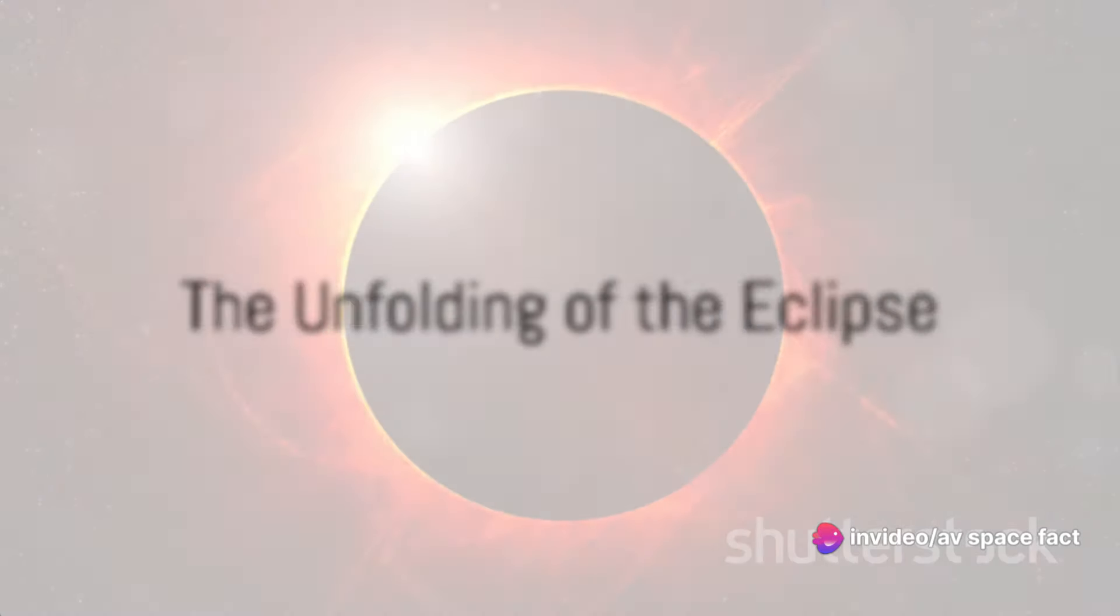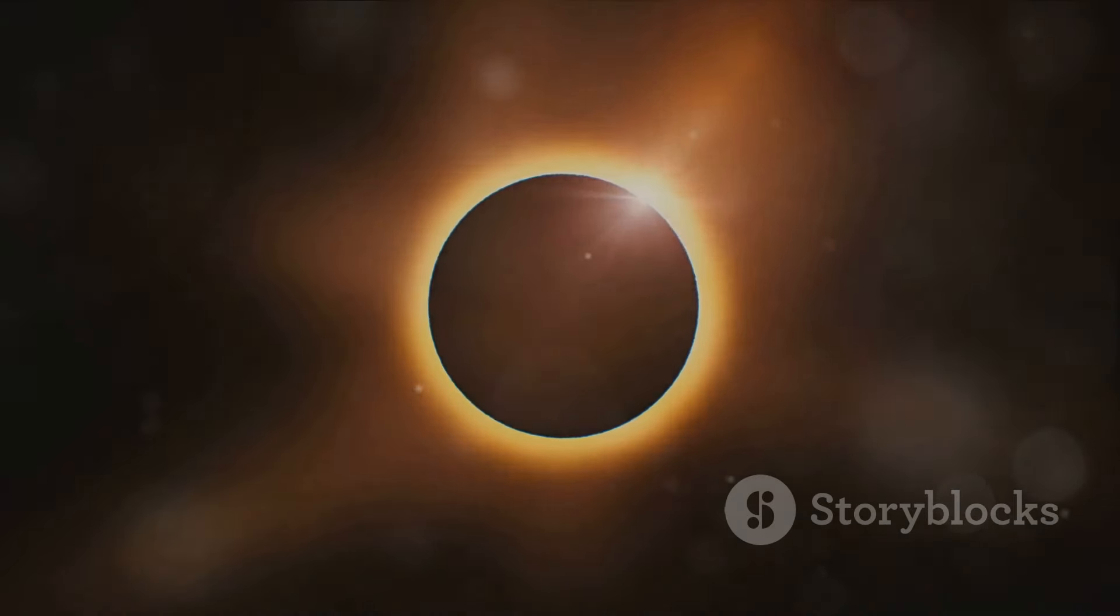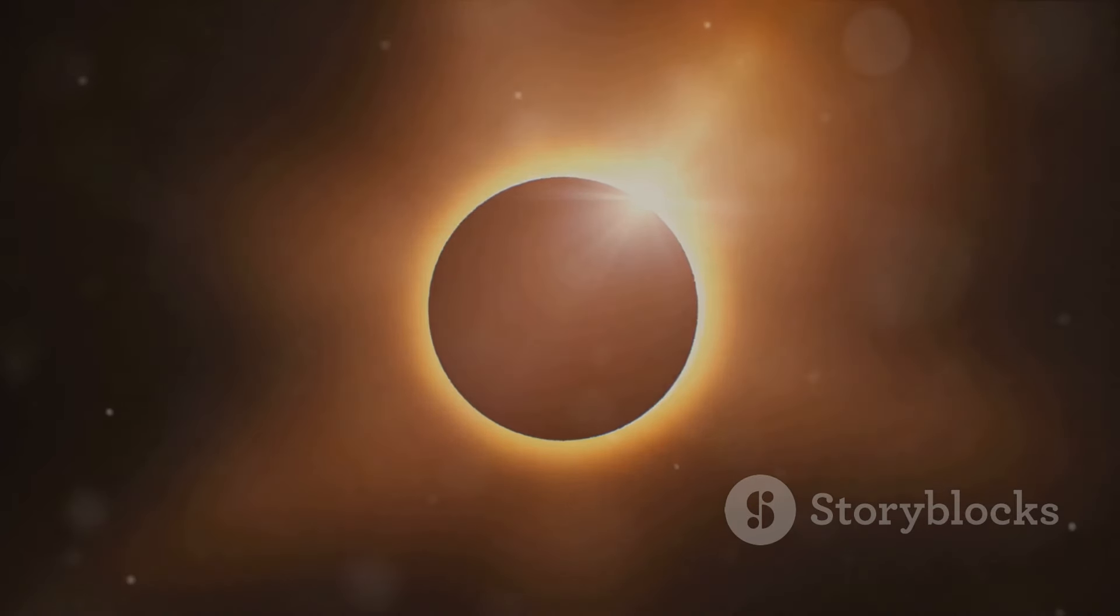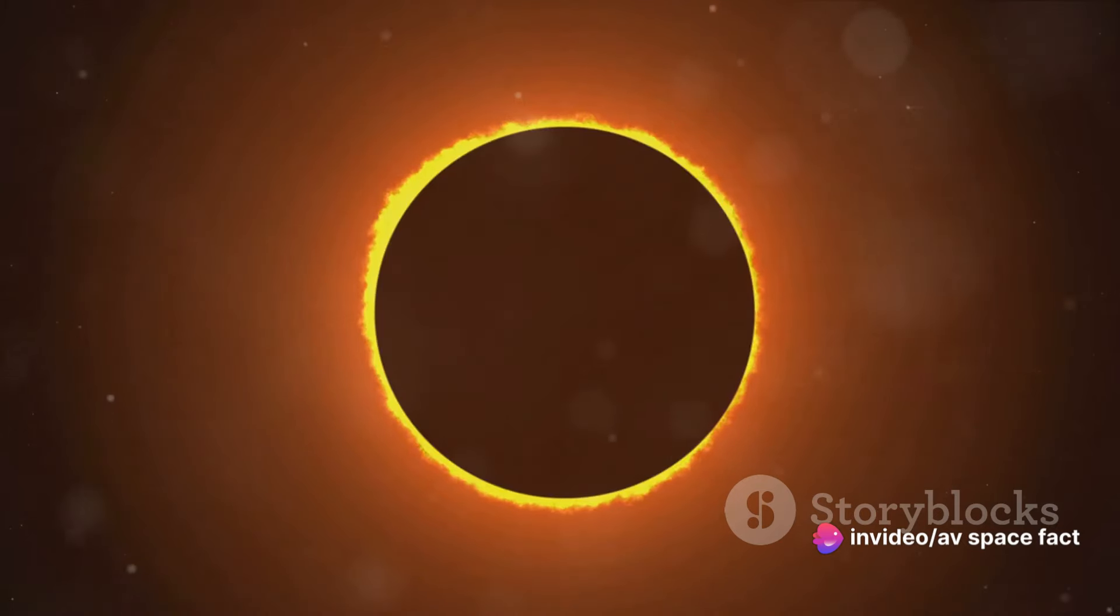Imagine the sun, our source of light and life, slowly being obscured by the moon. A spectacle begins as the moon takes its first bite out of the sun, initiating the partial phase of the eclipse. Gradually the vibrant daylight starts to dim, casting an otherworldly hue over the landscape.